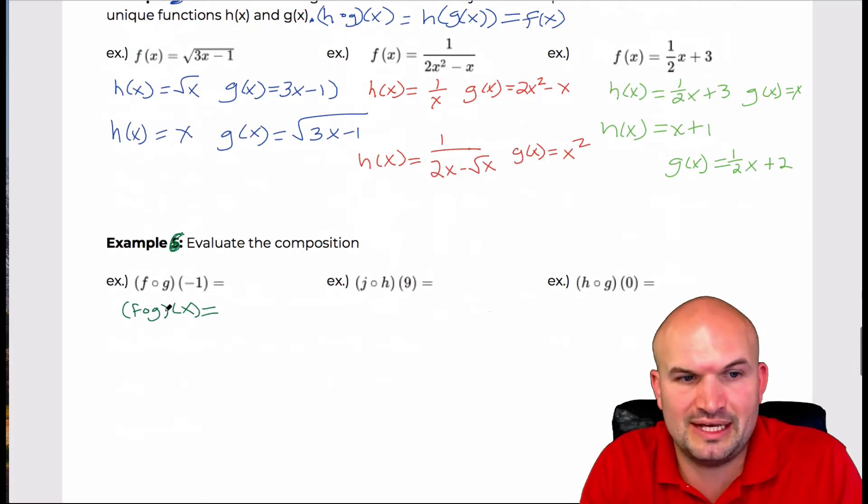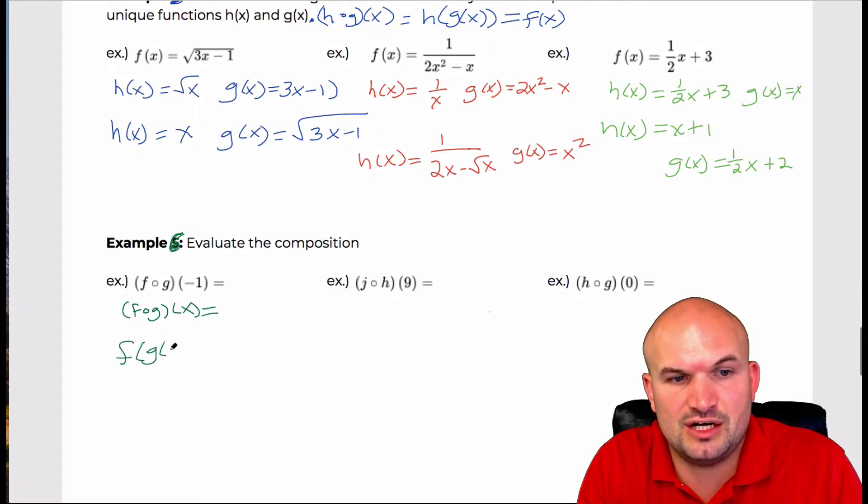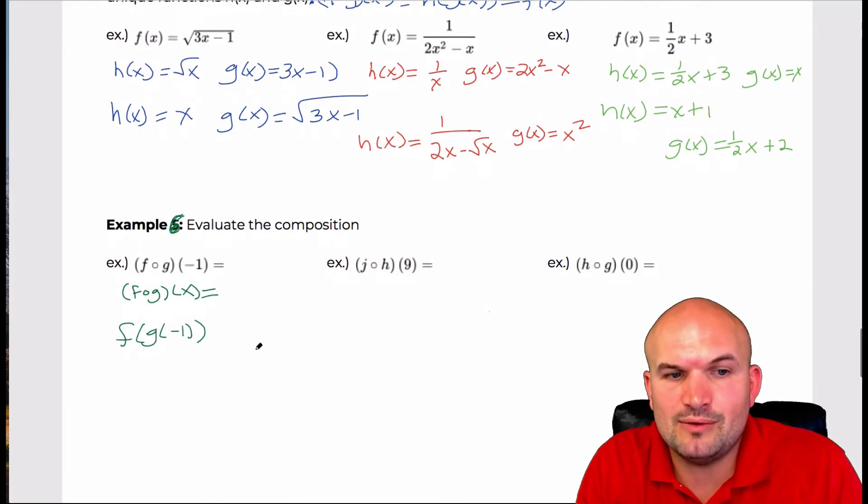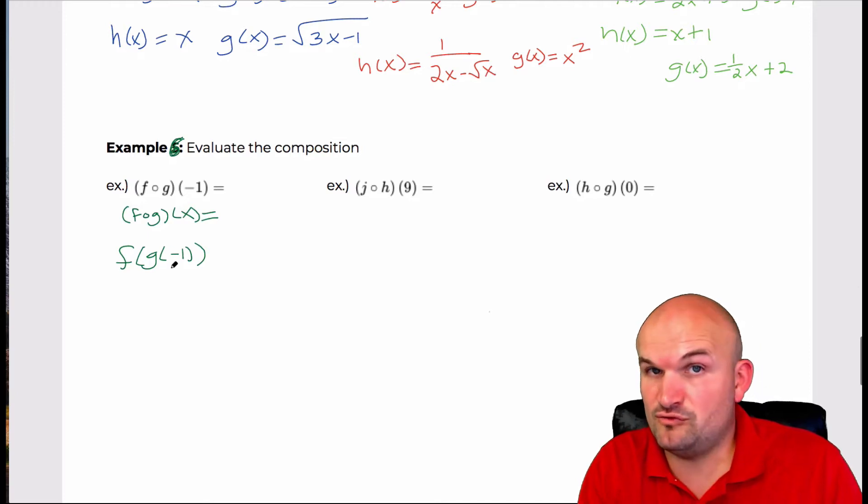So the easiest thing that I like to do is go ahead and basically again what this is saying is this is really saying f of g of negative one. So why don't we just evaluate for what g of negative one is and then go ahead and plug that into f.